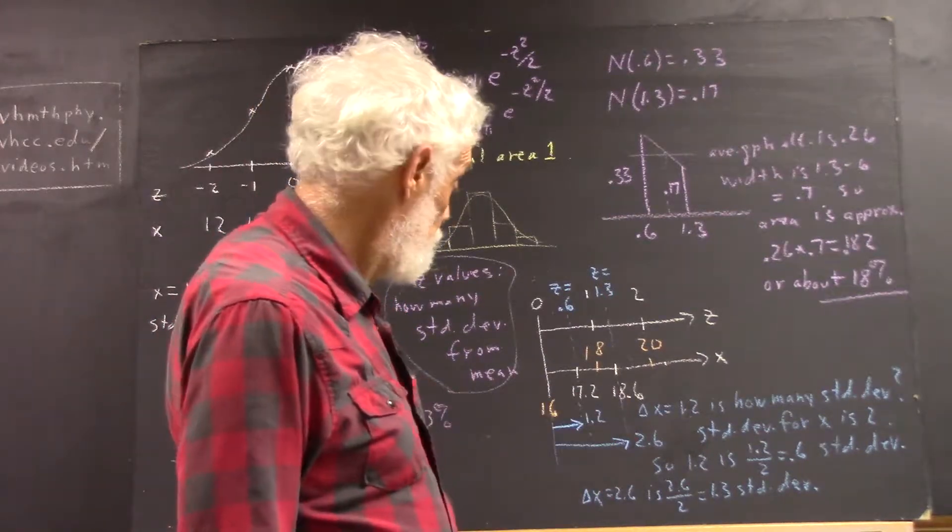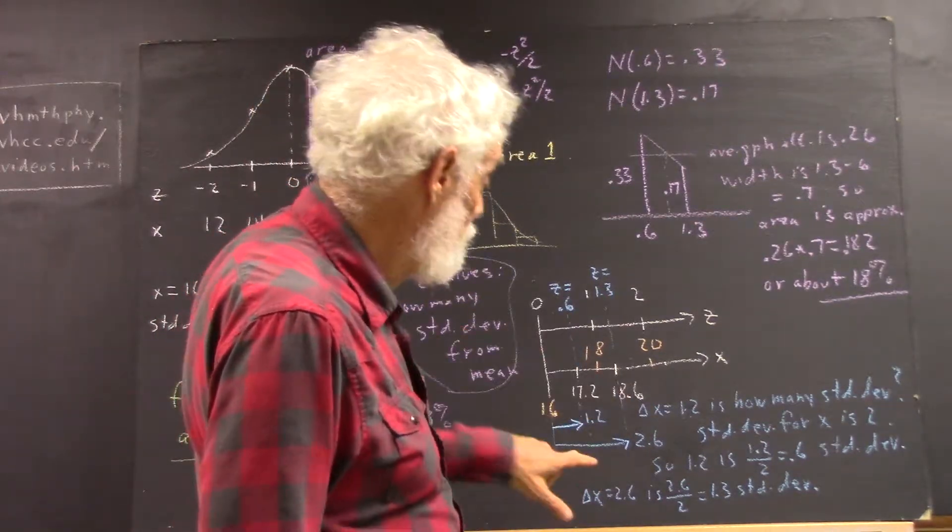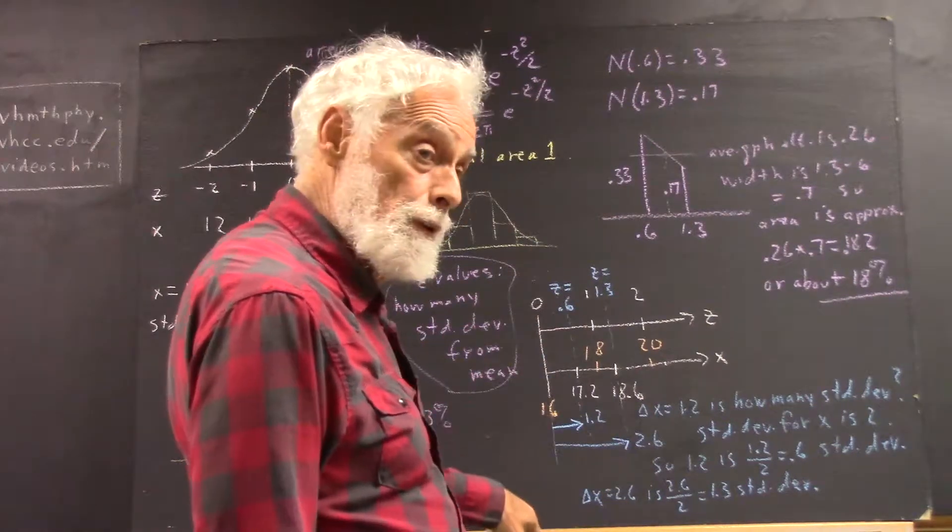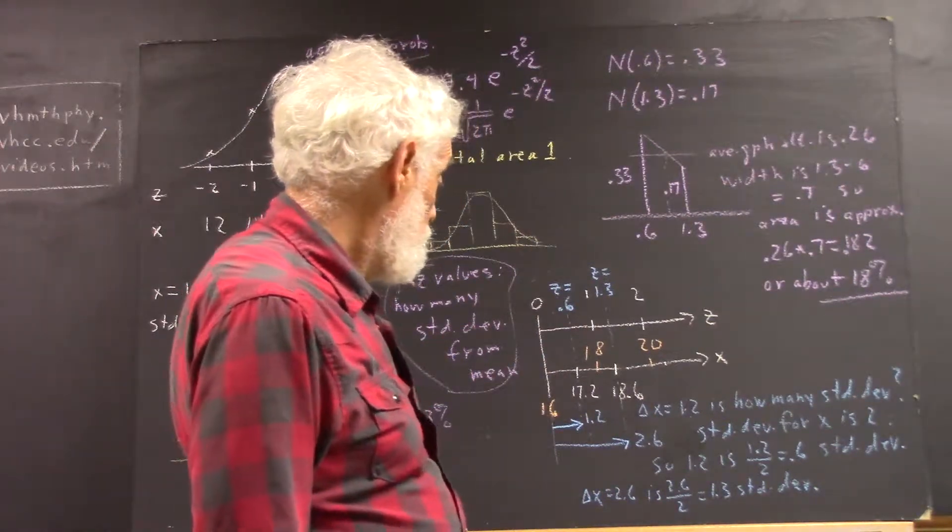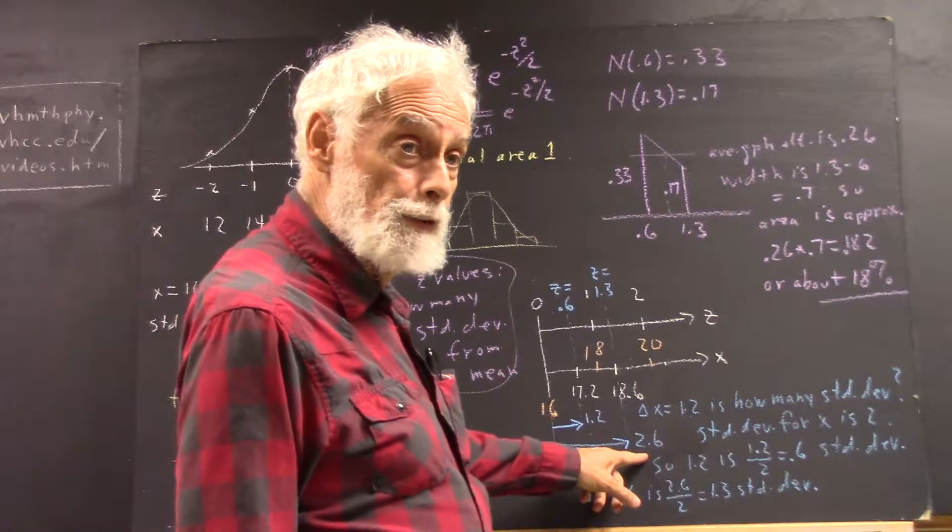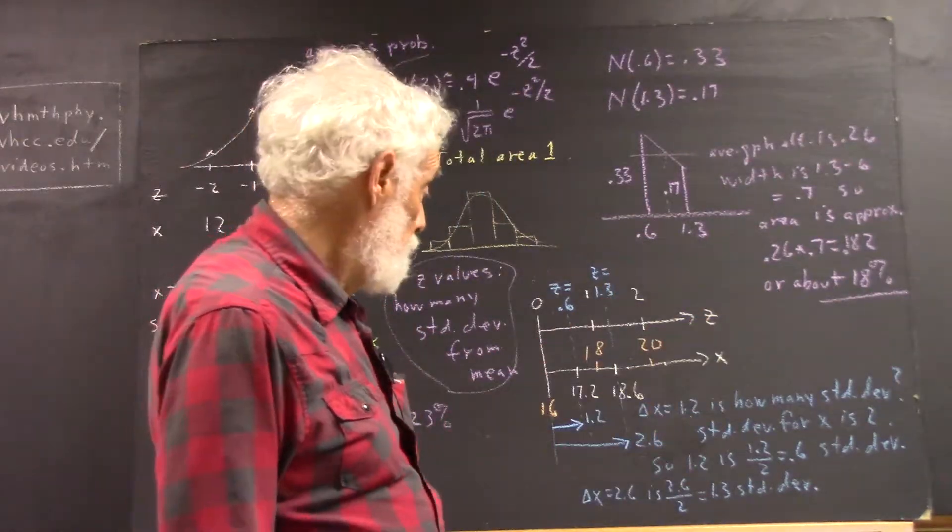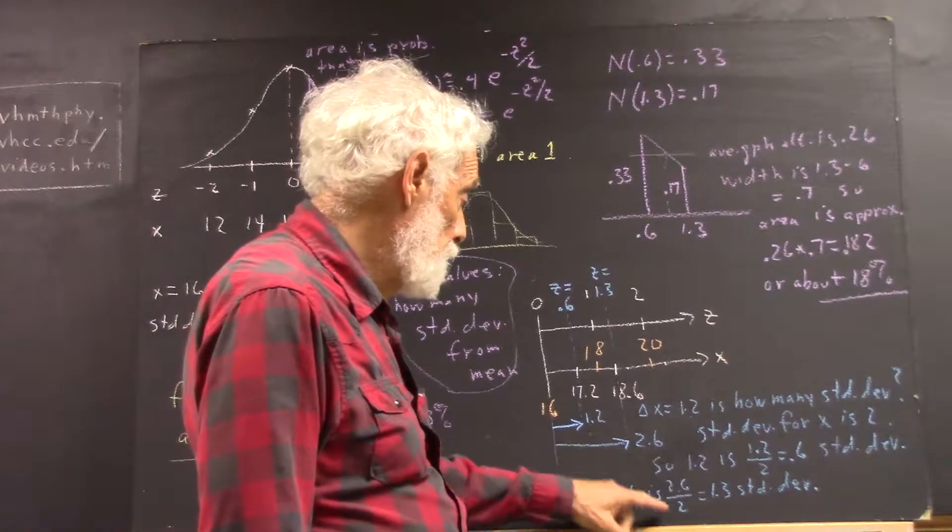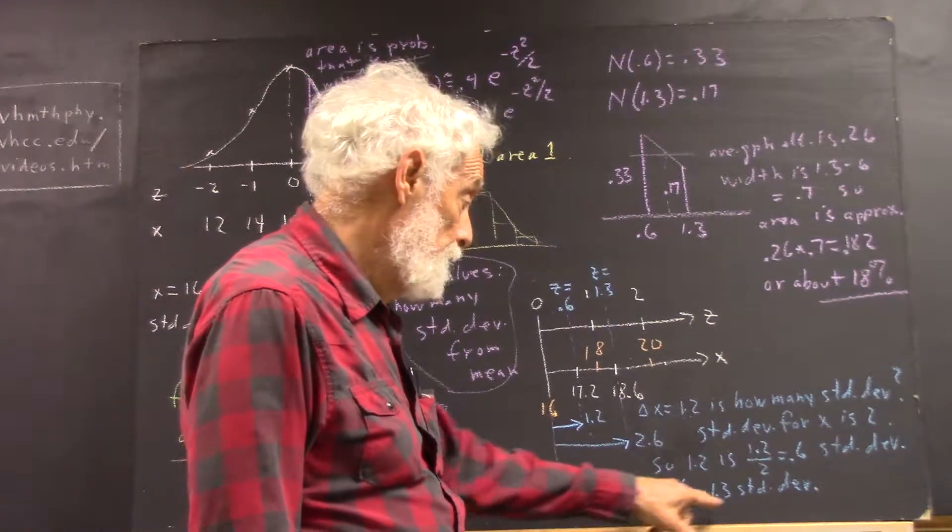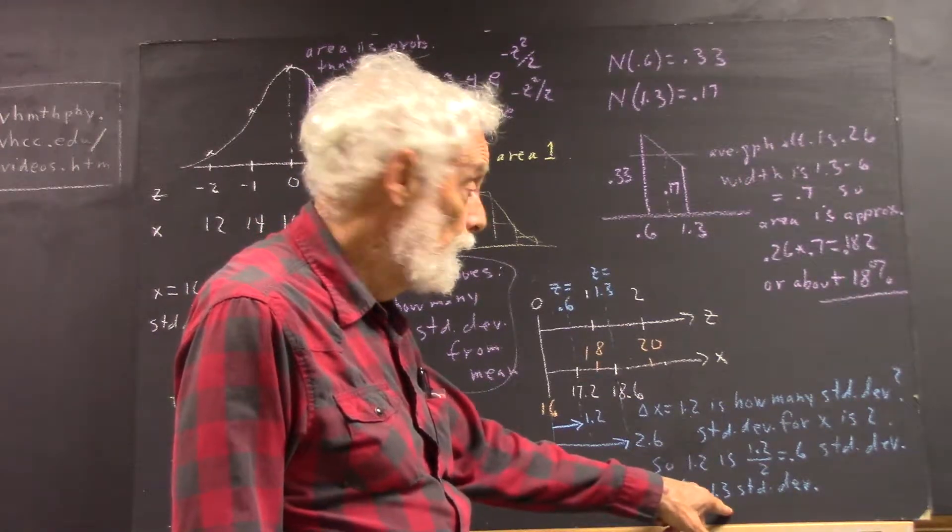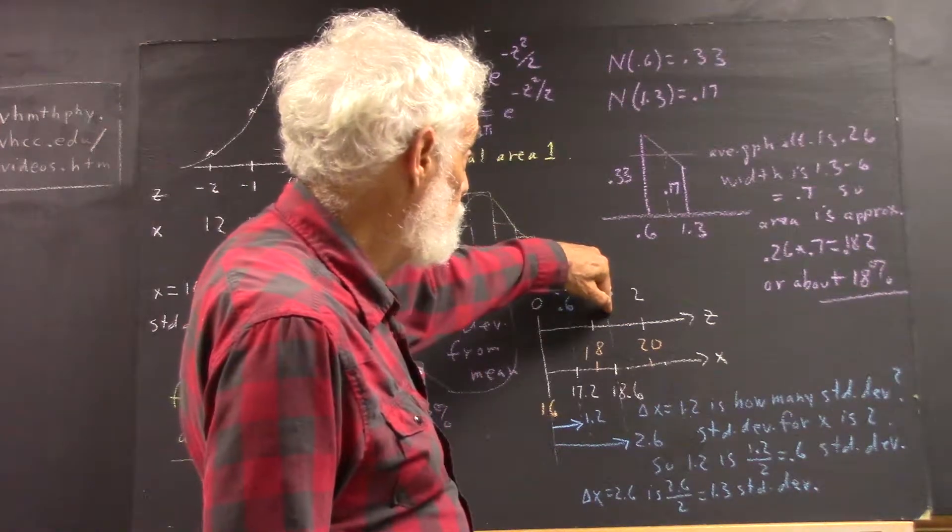What about 18.6? Well, that's 2.6 units from the mean. How many standard deviations is that? Well, standard deviation for x, again, is 2. So we divide the 2.6 by 2, and we get 1.3 standard deviations. So z at this point is 1.3.